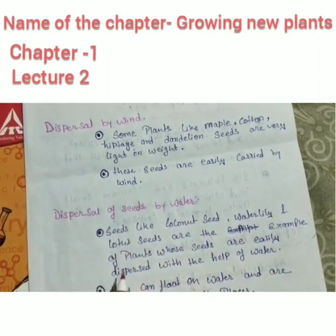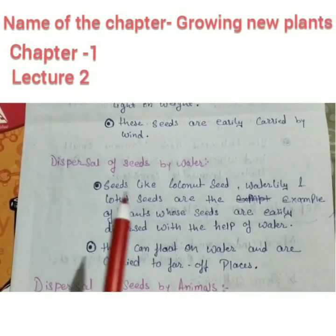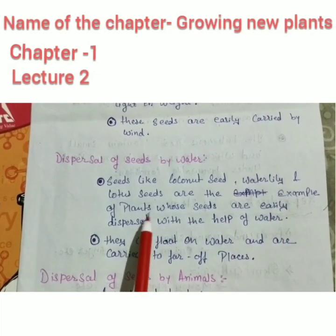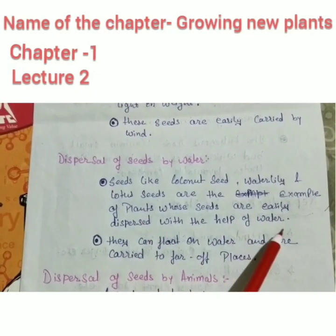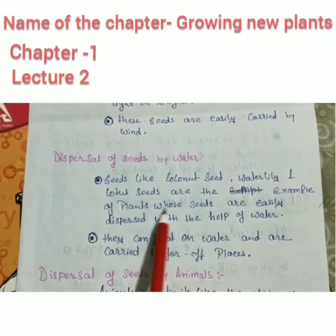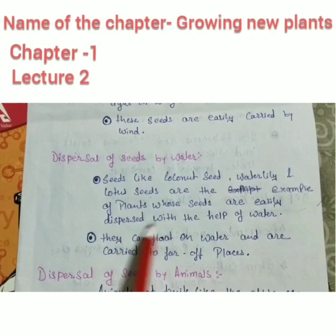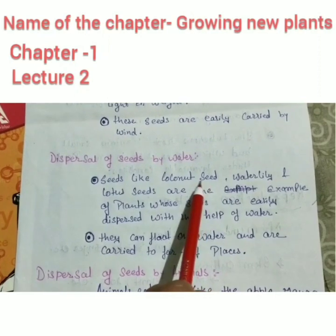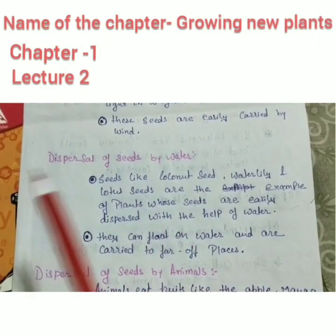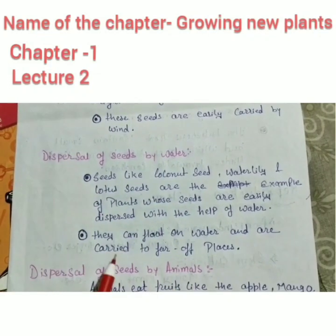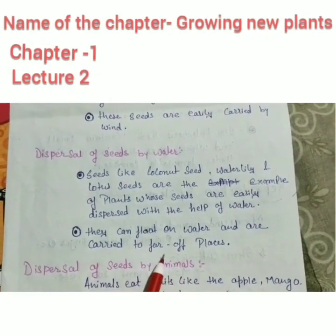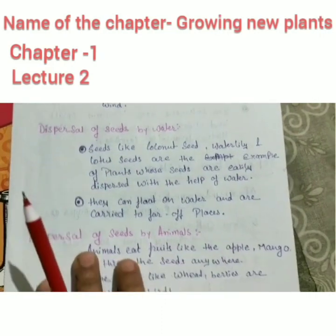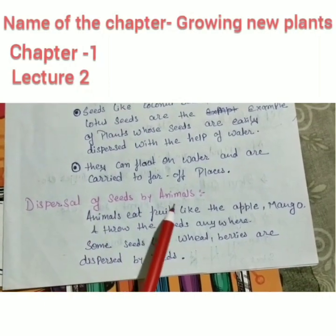Dispersal by water: seeds like coconut, water lily, and lotus are examples of plants whose seeds are easily dispersed with the help of water, because these plants are already grown near river areas or water bodies. The coconut seed is light in weight and has a rough, fibrous structure which helps it float on water and be carried to far-off places.